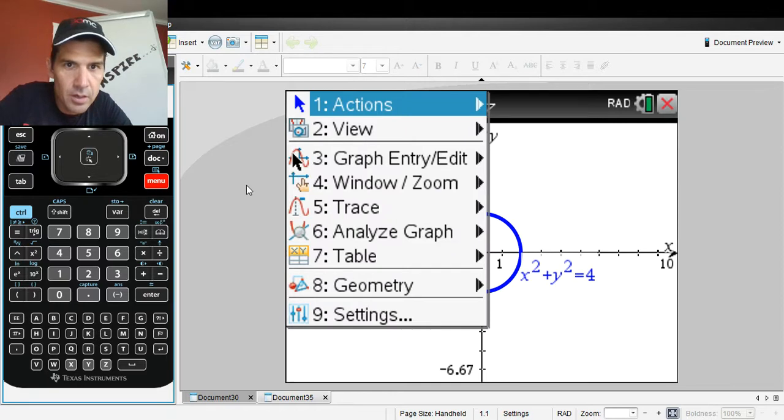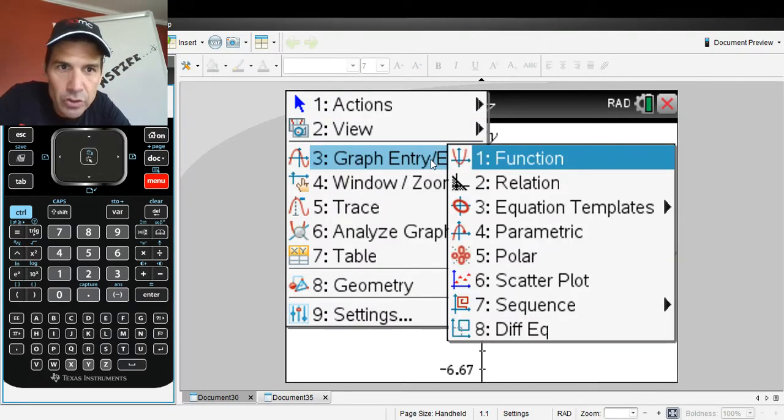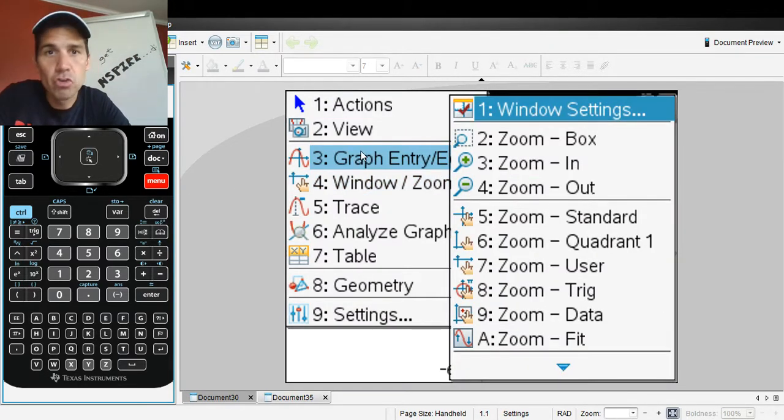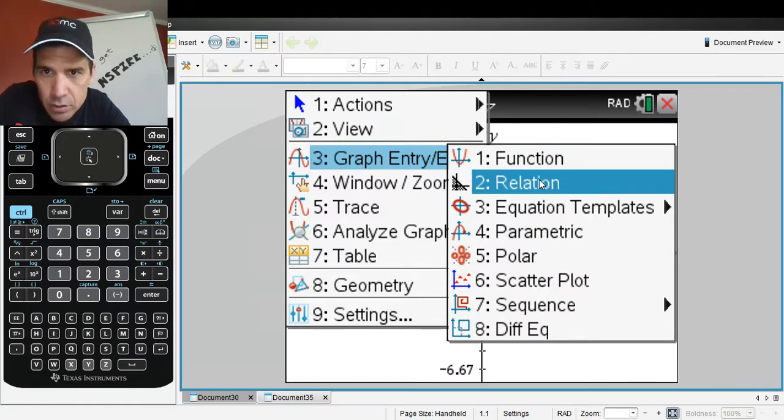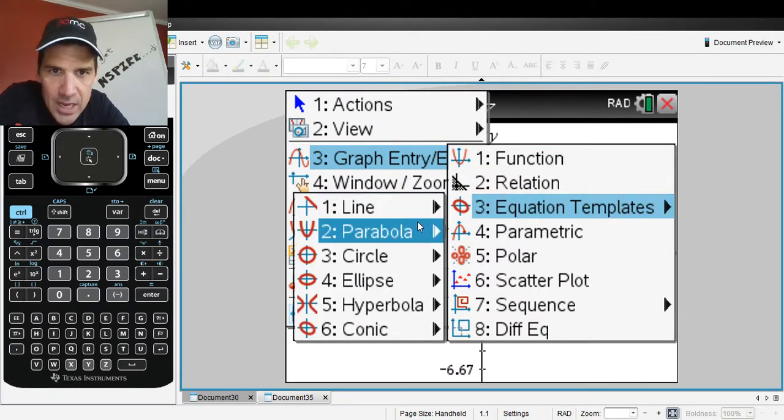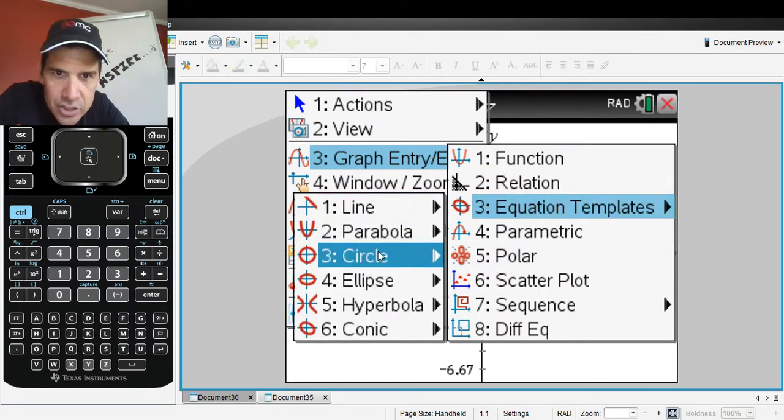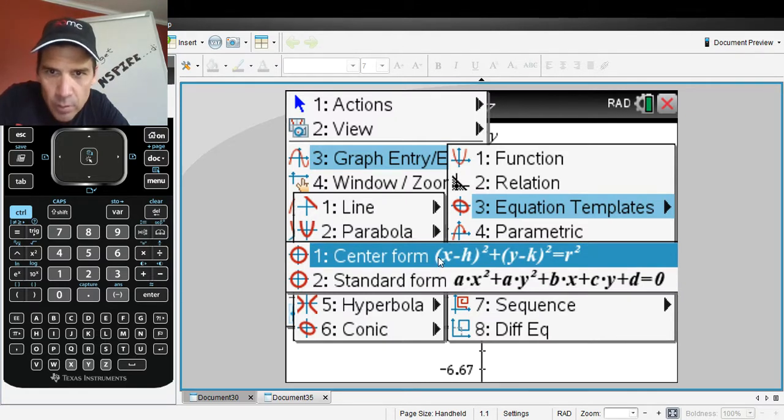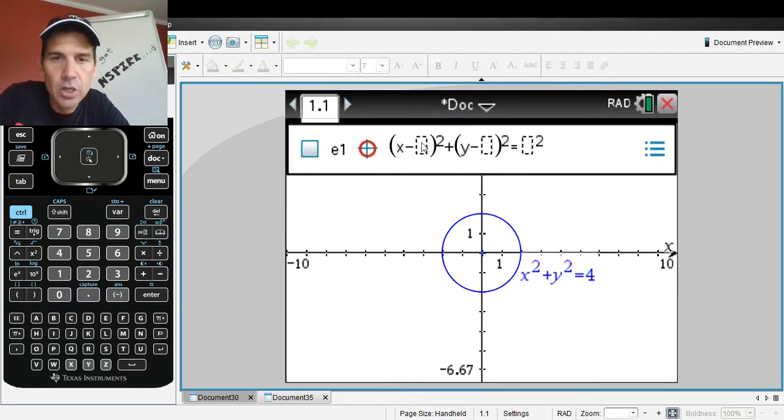Let's go graph entry again. So again you hit menu, graph entry, and you go to equation templates. I want to make a circle and I'm going to do it in this form that's already factored.